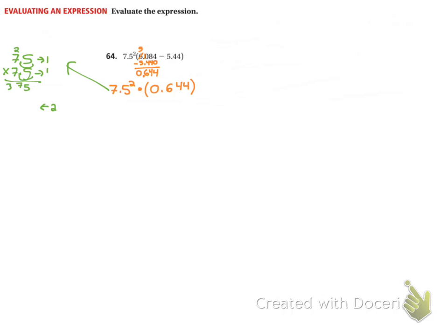I'm going to put in a placeholder. Multiply 7 times 5, which is 35. Carry my 3. 7 times 7 is 49. Plus 3 is 52.